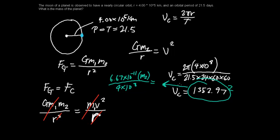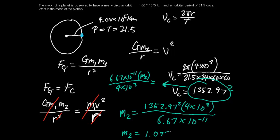Sorry about that, no space. And what we have to do is we would multiply, multiply, multiply this over, divide this, and you get mass. So it should look like m2 equals 1,352.97 squared times 4 times 10 to the 8th power over 6.67 times 10 to the negative 11, and your answer should be 1.089 times 10 to the 25.